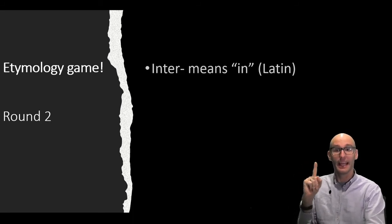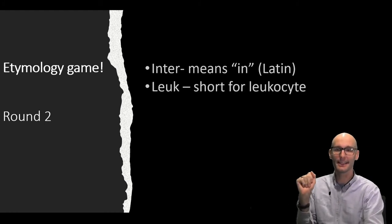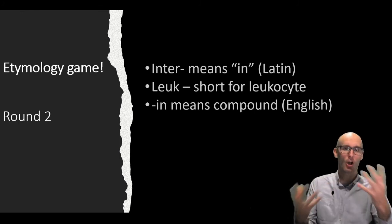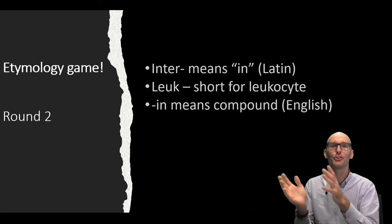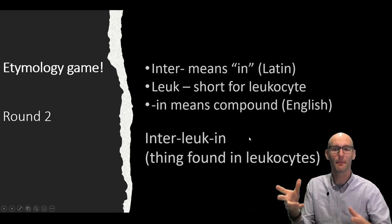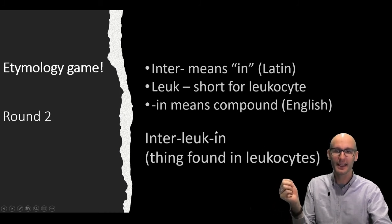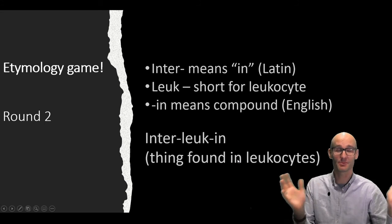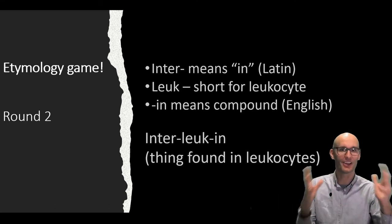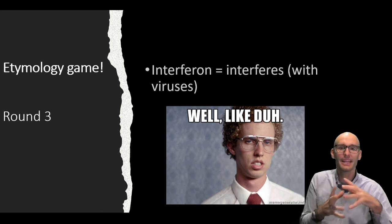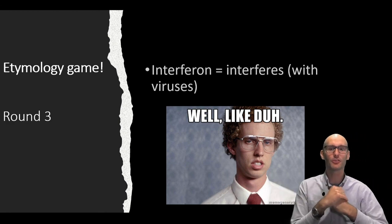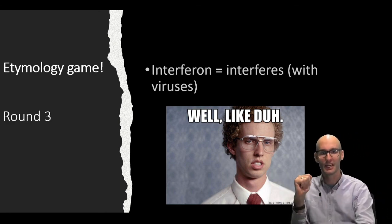Etymology game round two. Inter means in, that's obvious. Leuk is short for leukocyte and in means a compound. Penicillin, insulin, the ending in means compound. So you end up with interleukin, which means something found in leukocytes. In leukocytes compound. So interleukin just means a compound found in leukocytes. It's not an informative definition, just learn interleukin IL. Round three, interferon. It was named because it interferes with viral life cycles. So this is a nice and simple one. Interferons interfere with viral life cycles. That's the etymology game.